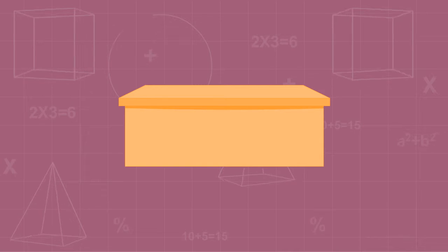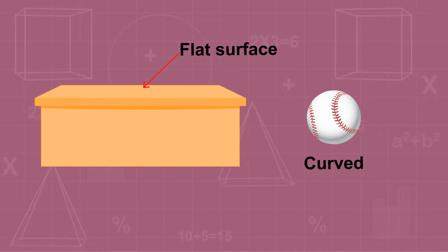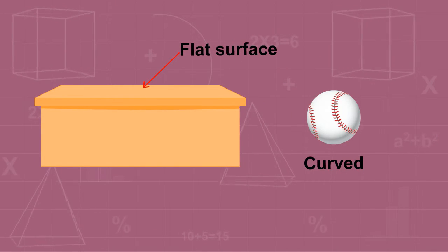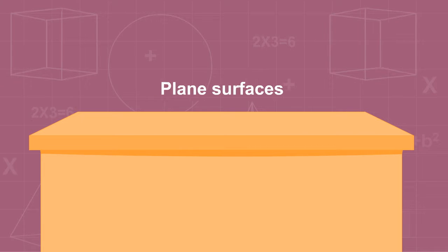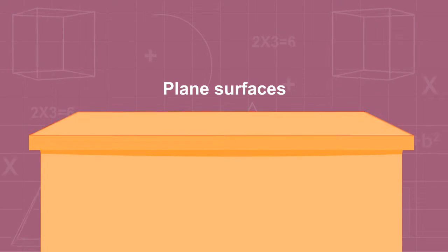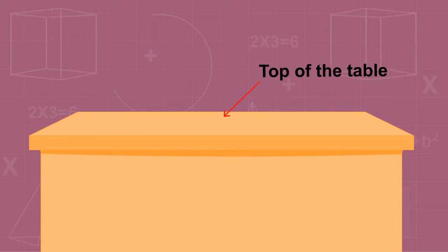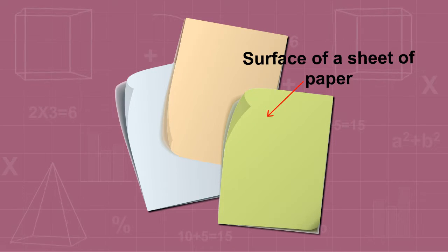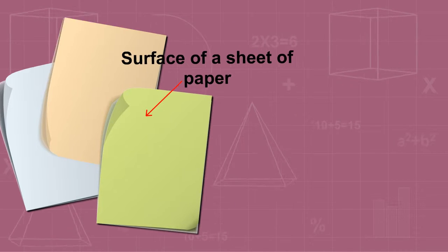A solid has a surface which may be flat or curved. Flat surfaces are known as plane surfaces which extend indefinitely in all directions. For example, top of the table, surface of a sheet of paper, etc.